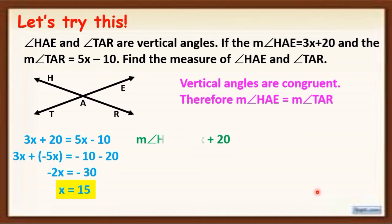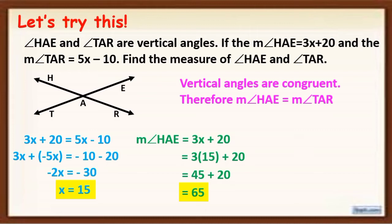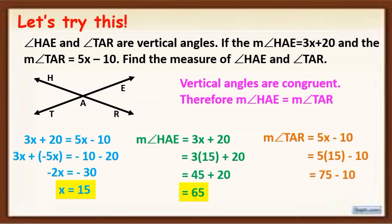First, we are going to find the measure of angle HAE. So the measure of angle HAE is equal to 3x plus 20. Substitute x = 15: 3 times 15 equals 45, plus 20 equals 65. Now let's get the measure of angle TAR: 5x minus 10, substitute x = 15: 5 times 15 equals 75, minus 10 equals 65. As you can see, the measure of angle HAE and angle TAR are the same because vertical angles are congruent.